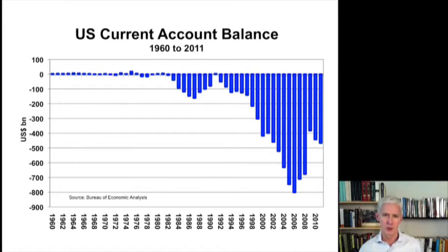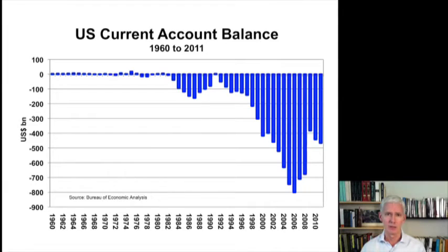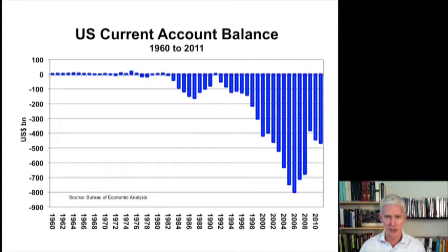This chart shows the U.S. current account balance. It went from more or less in balance during the 1960s up to a deficit of $800 billion in 2006. We've already seen how these trade deficits blew the trade surplus countries into bubbles like Japan in the 1980s and Thailand and the other Asia crisis countries in the 1990s. In this lecture, we're going to take a look at how these trade deficit dollars boomeranged back into the United States and blew it into an economic bubble as well.